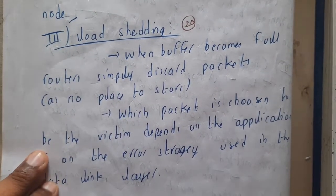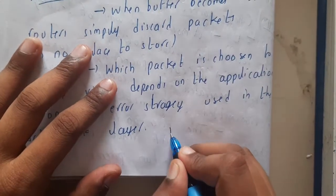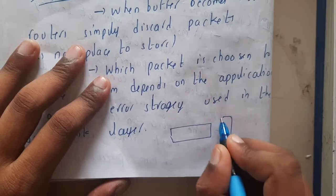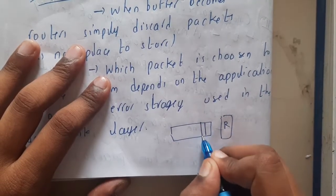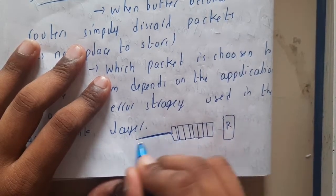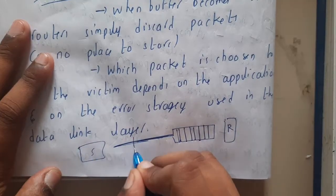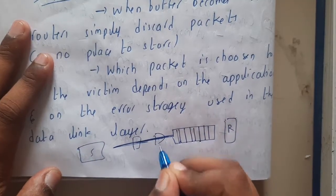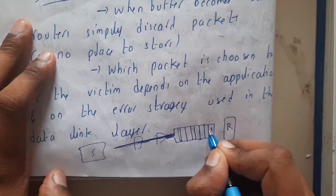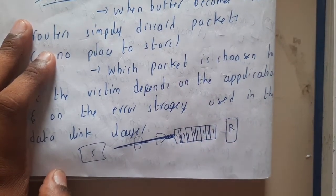Assume this scenario: we will be using some buffers at the receiver. The receiver has a buffer. Before removing from the transmission lane, assume the sender has a lane with multiple nodes in between. At the end, you observe that there is congestion and this buffer is completely full.